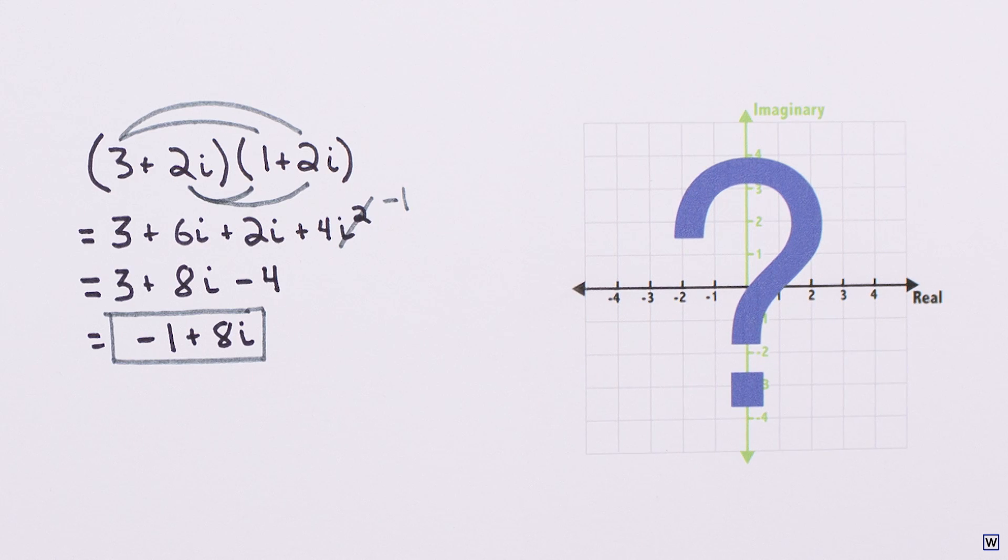Last time, we left off with a real math problem. What is the connection between complex multiplication and the complex plane?